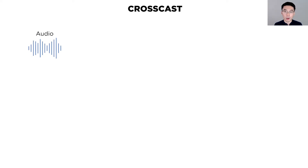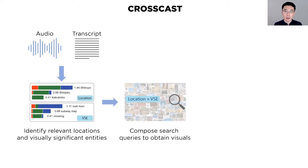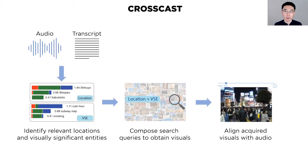Taking the audio and transcript from the podcast as input, CrossCast first identifies relevant locations and visually significant entities being discussed at any moment of the podcast. It combines them as search queries to obtain relevant visuals and aligns the visuals to the audio to create an audiovisual experience.